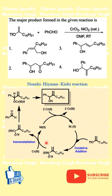After oxidative insertion, what we get is a nickel(II) complex, which undergoes transmetallation to form a chromium(III) species. This species attacks the aldehyde to form an intermediate, which on quenching leads to the formation of allylic alcohol. So the correct answer is option number four.